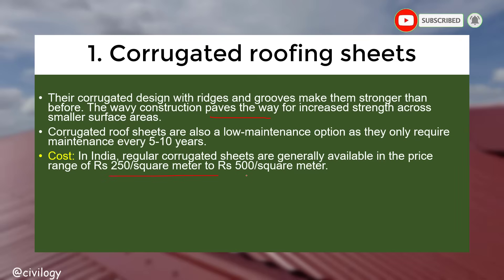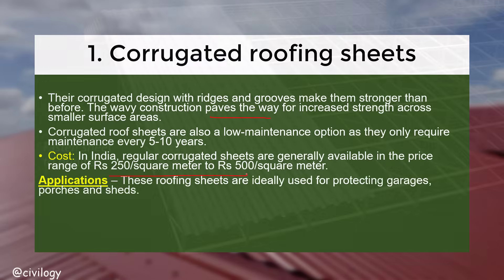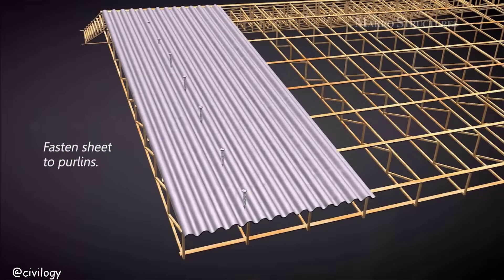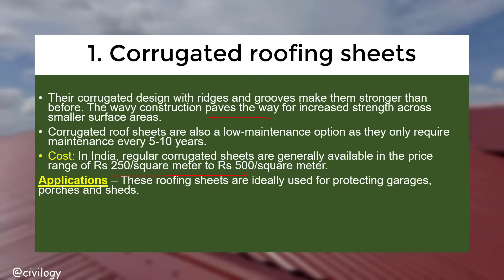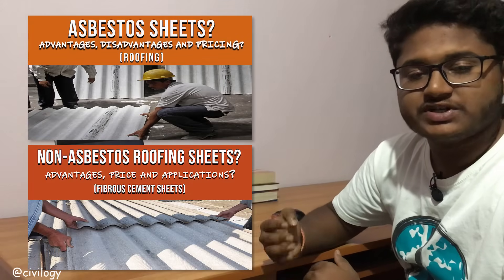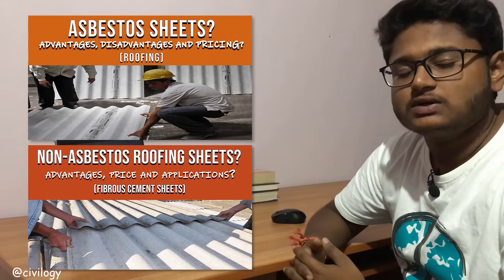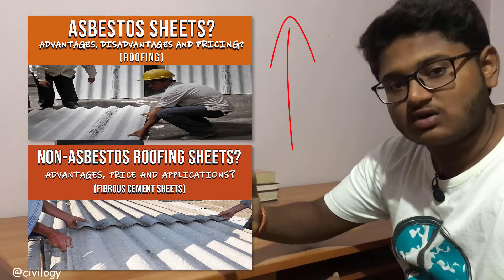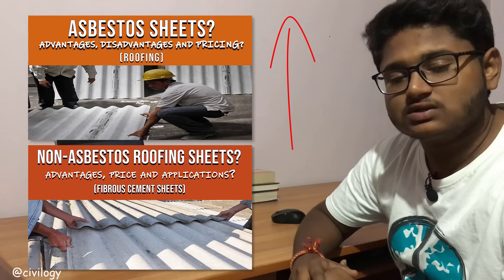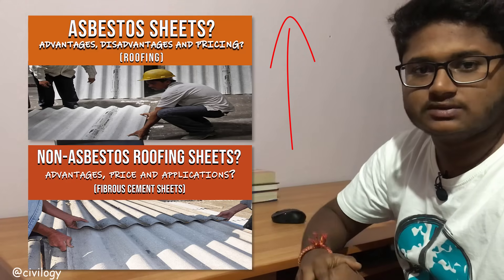In India, regular corrugated sheets are generally available in the price range of 250 to 500 per square meter. These roofing sheets are ideally used for protecting garages, washrooms, and sheds. Examples of corrugated roofing sheets include asbestos, non-asbestos, plastic, and galvanized iron. We already made a video on asbestos and non-asbestos sheets — a link will be in the description.